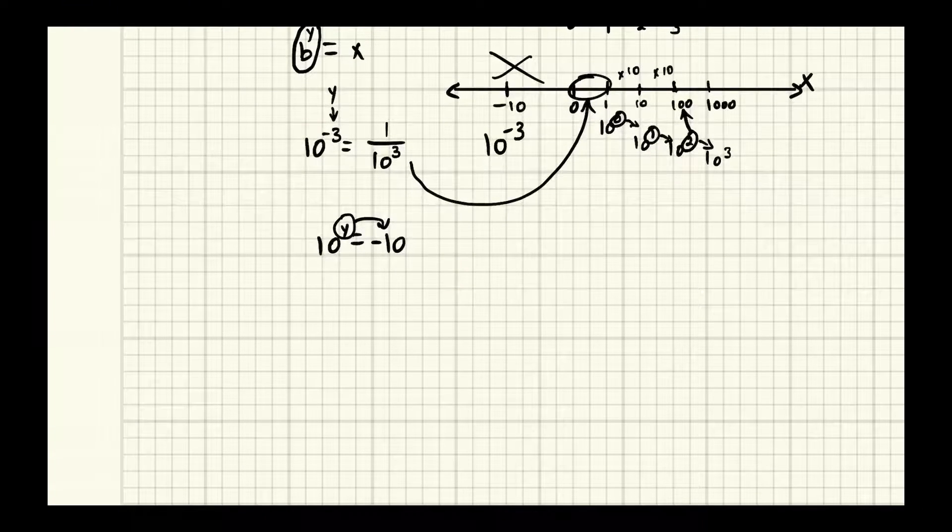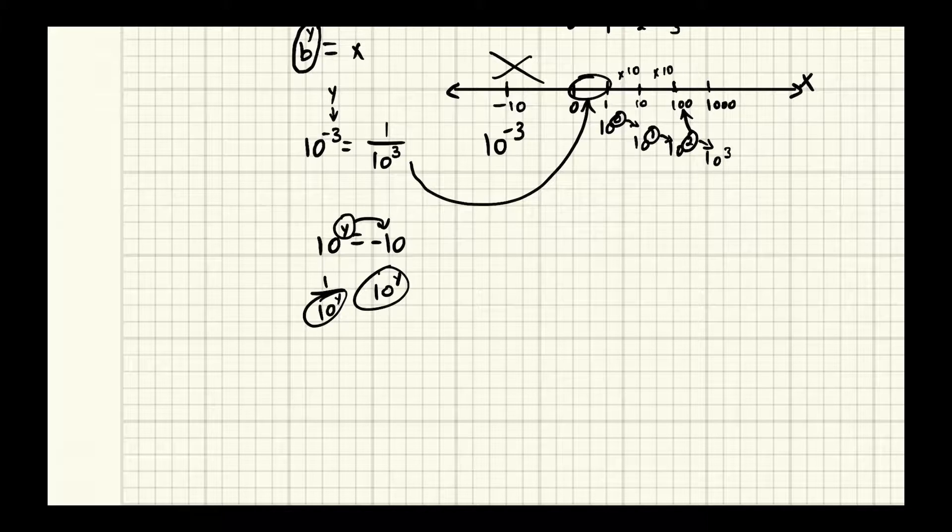Well can you ever raise 10 to a power y that will give you a negative number? If you make y negative, you'll get 1 over 10 to the y. Otherwise you just have 10 to the y. Both of which will always return a positive number. This will just be like 10 times itself some number of times on the bottom. This will just be 10 times itself some number of times.